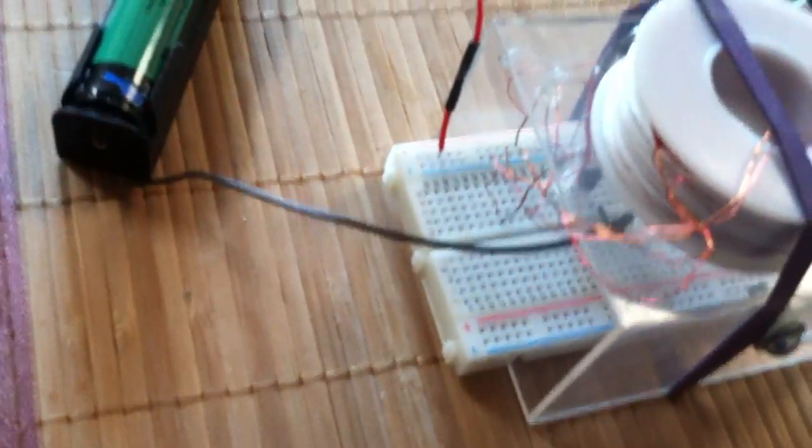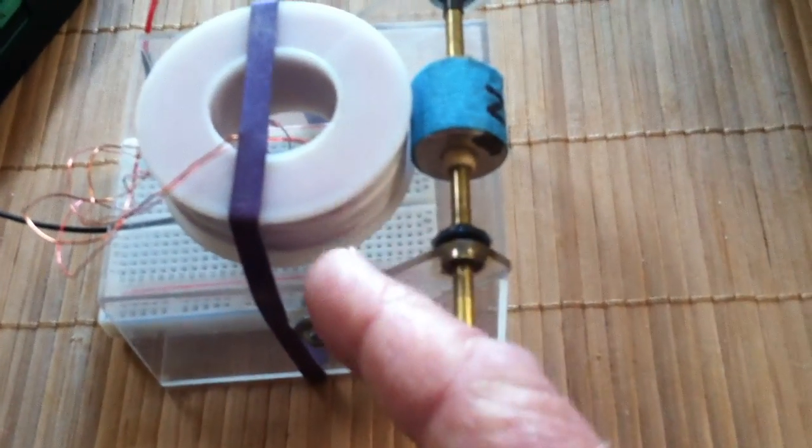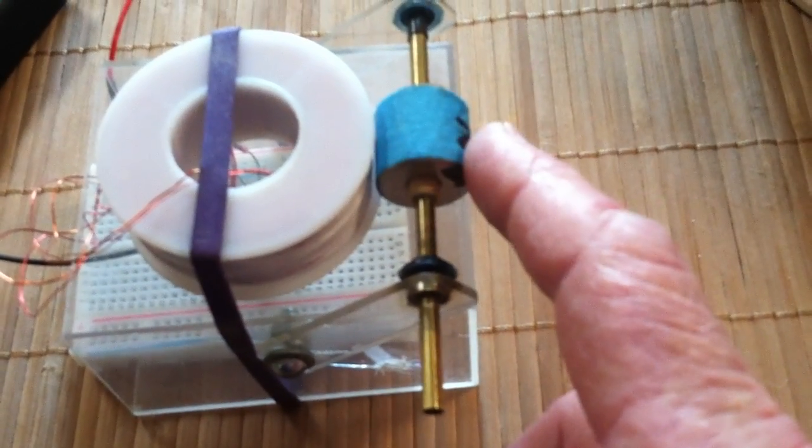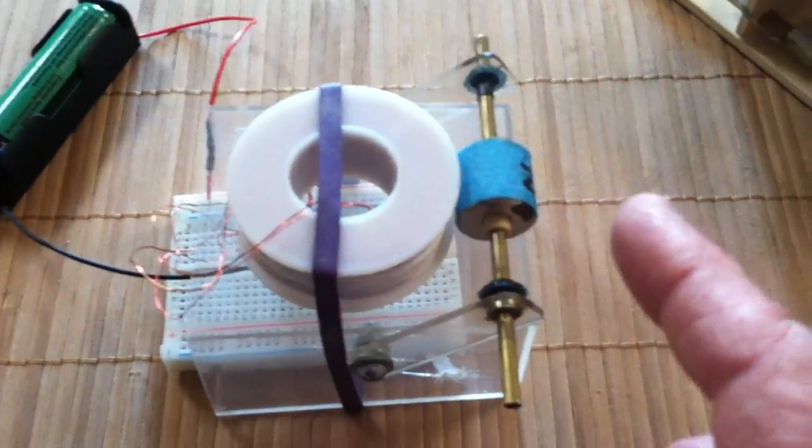So anyway, what I've got here is just a Bedini SSG basically with a little strange configuration, single transistor circuit, bi-filer winding coil, single magnet here, and I'll fire it up here and this will get to running.